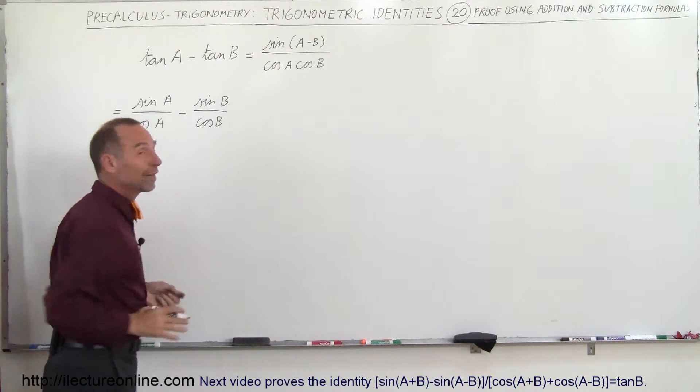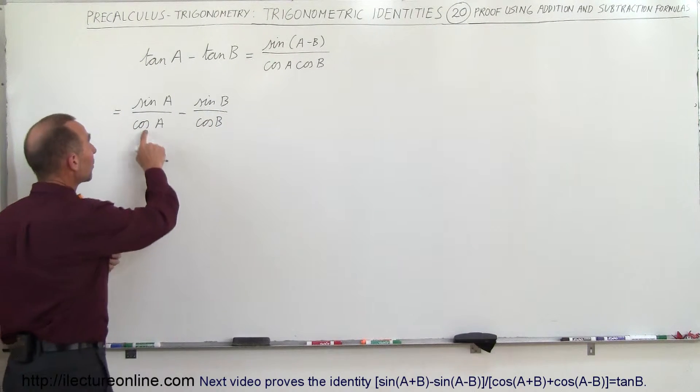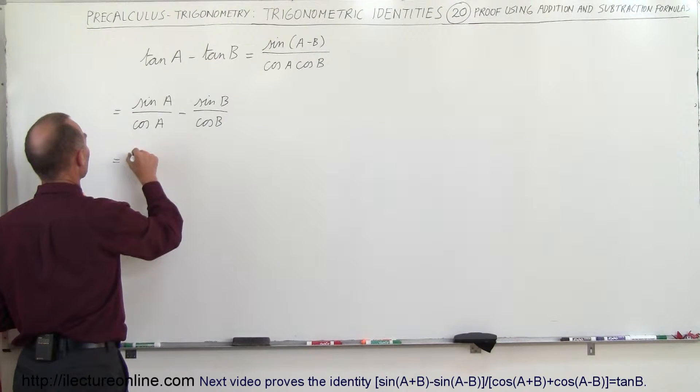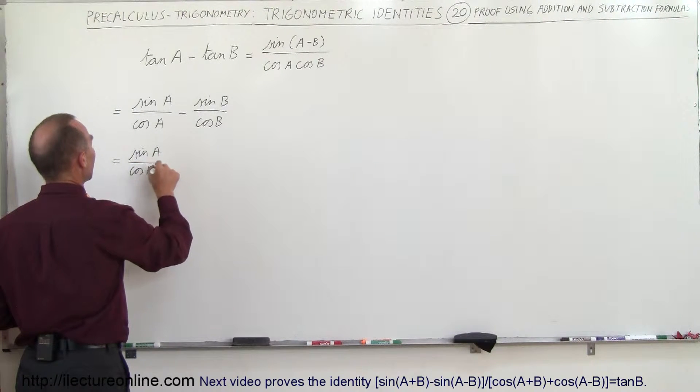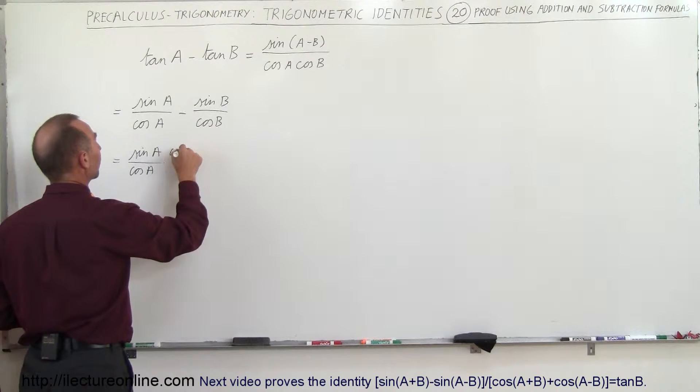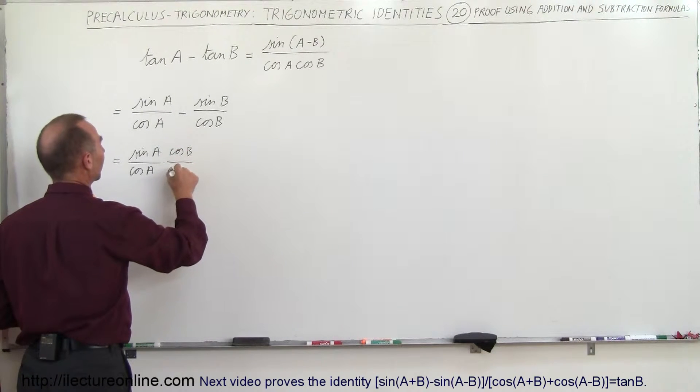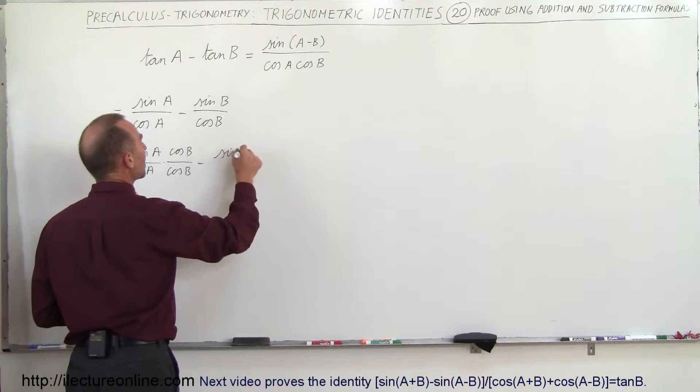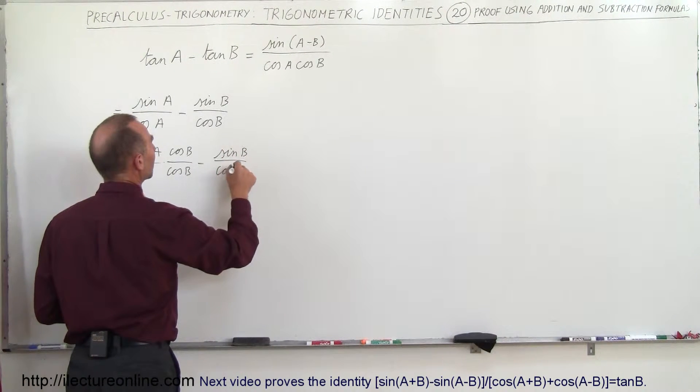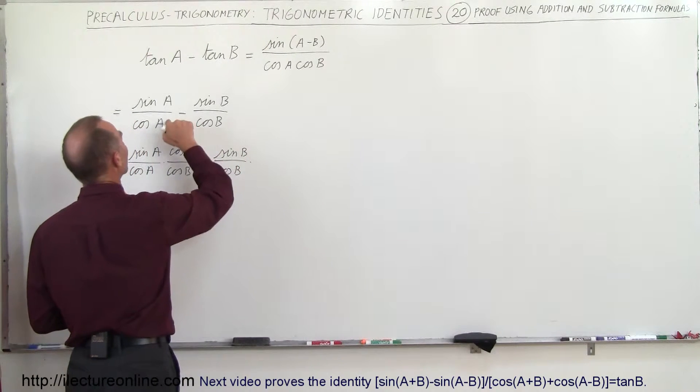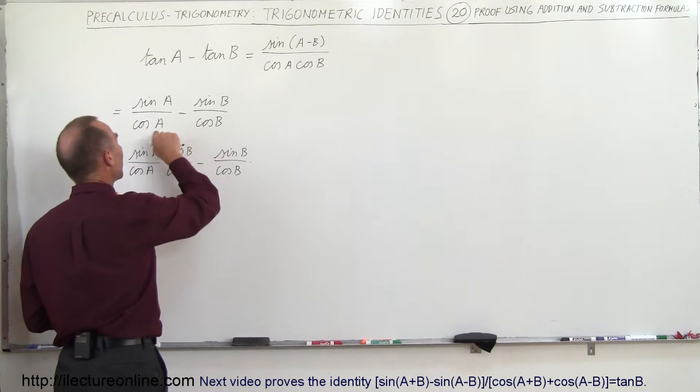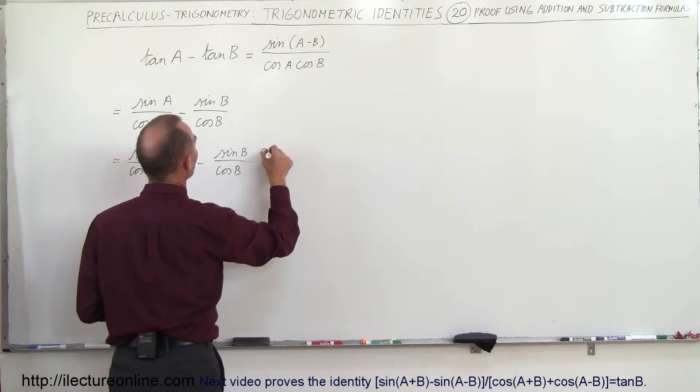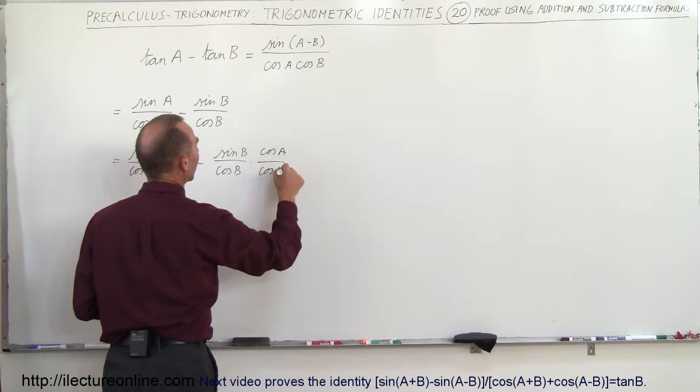And then let's write that over a common denominator, which would be the product of these two. So this can now be written as sine A divided by cosine A times the denominator of the other side, cosine B over cosine B, minus sine B divided by cosine B, multiplying the numerator and denominator by the denominator of the other one here. So that would be cosine A divided by cosine A.